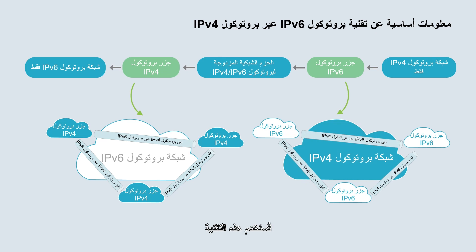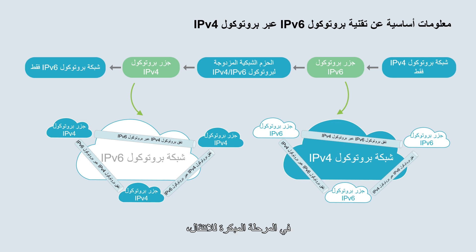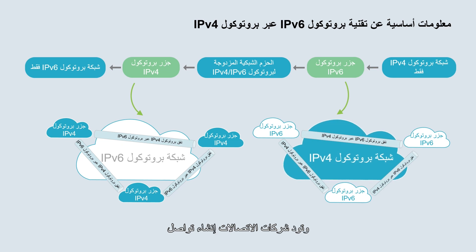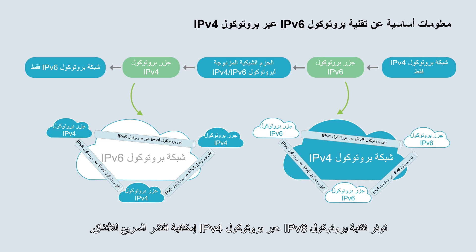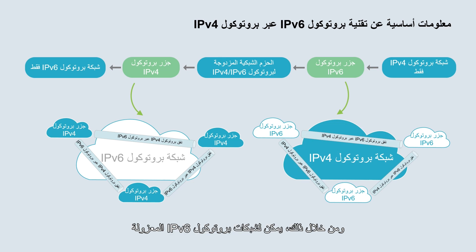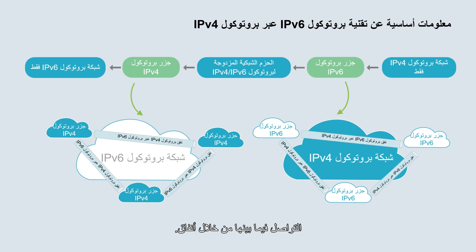IPv6 over IPv4 is used in the early stage of the IPv4 to IPv6 transition. In the early stage, the backbone networks are still IPv4 networks and carriers wish to establish communication between local IPv6 networks. IPv6 over IPv4 offers fast tunnel deployment, allowing isolated IPv6 networks to communicate with each other through tunnels.